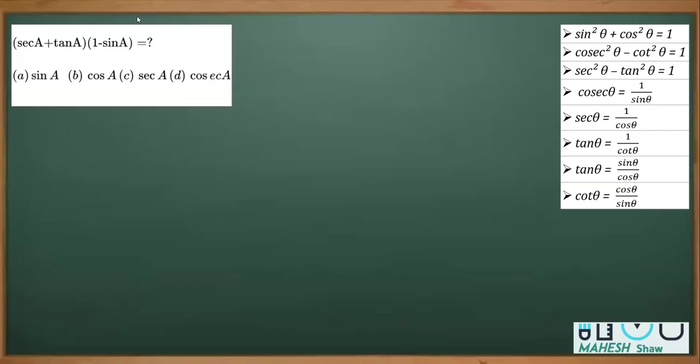In this question from trigonometric identity, we have secA plus tanA multiplied by (1 minus sinA), and these are the four options it equals.